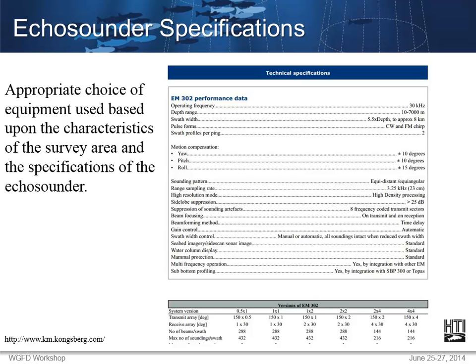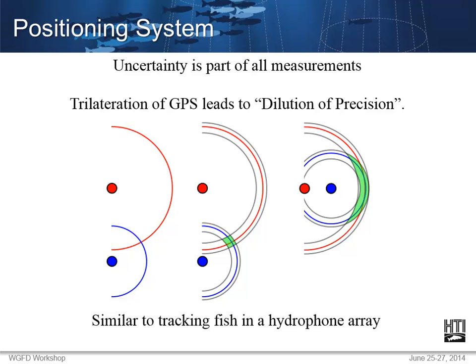As I'll show in an example later, you can take what is essentially single-beam data — a single point of depth every time you have a GPS coordinate for your vessel — and convert that into some basic bathymetry. Another thing to be concerned about in terms of equipment is your positioning system.